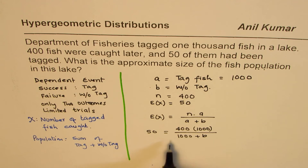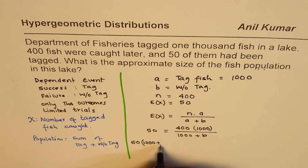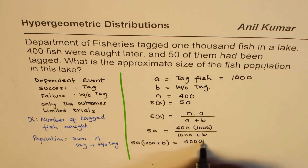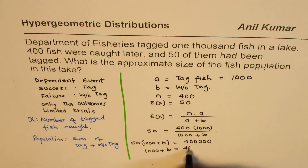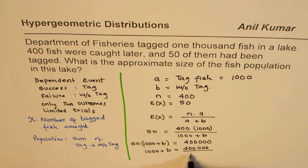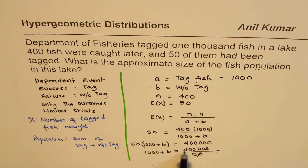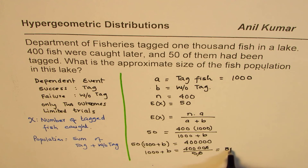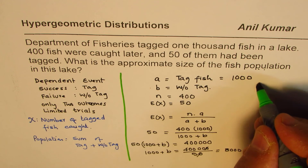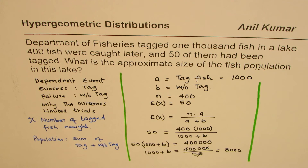Now we can actually cross-multiply and find the value of B — this is the only unknown. So we have 50 times (1,000 plus B) equals 400,000. You can divide by 50, so we get 1,000 plus B equals 400,000 divided by 50. When you divide, 5 goes 8 times, so we get 8,000. So 1,000 plus B is 8,000 — that is the denominator, 1,000 plus B, which is the population of 8,000.